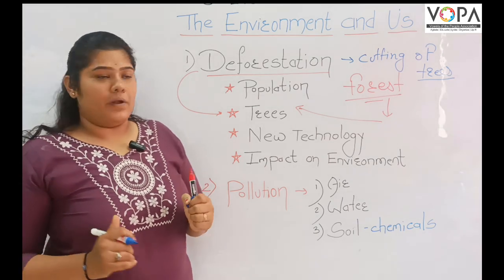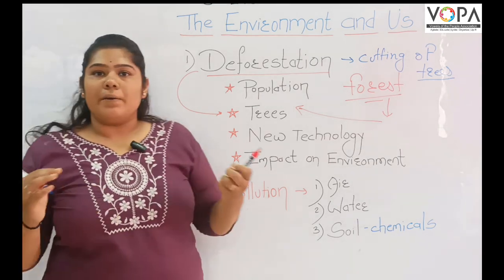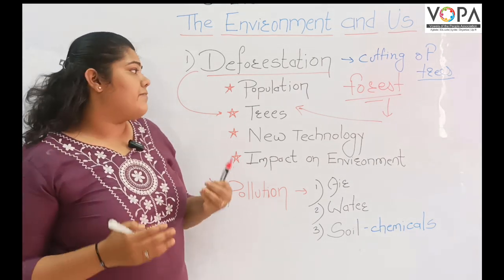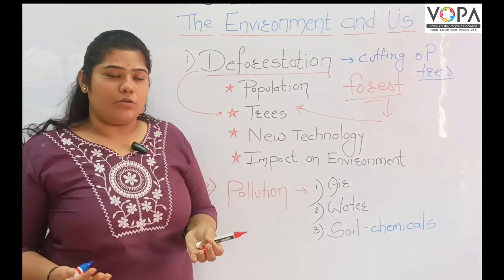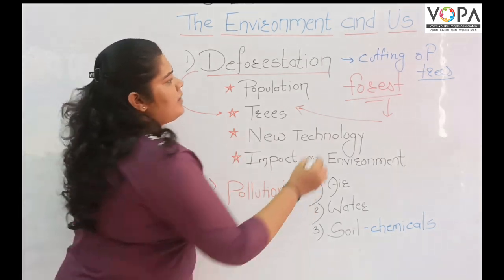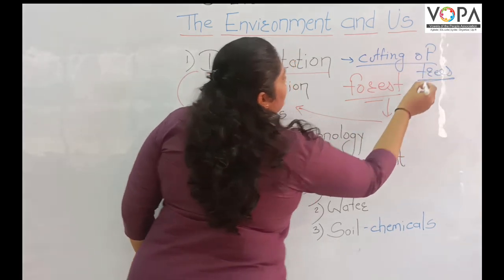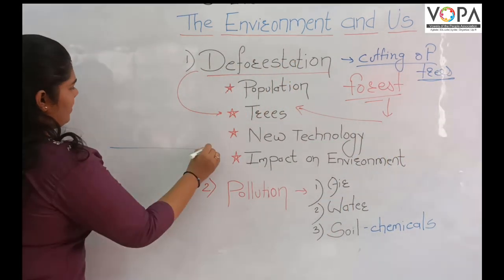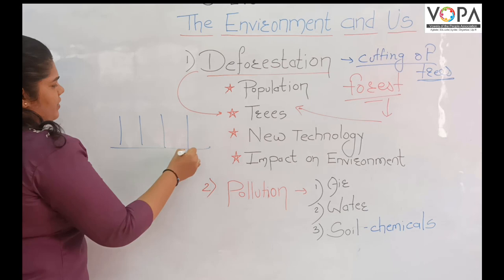Deforestation is applied when there is a big problem — when space or land is needed. The place is cleared by cutting of trees, and the forest is cleared or deforested to make way for other uses.